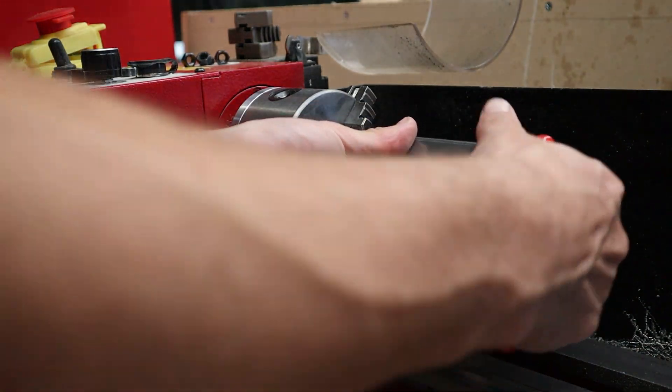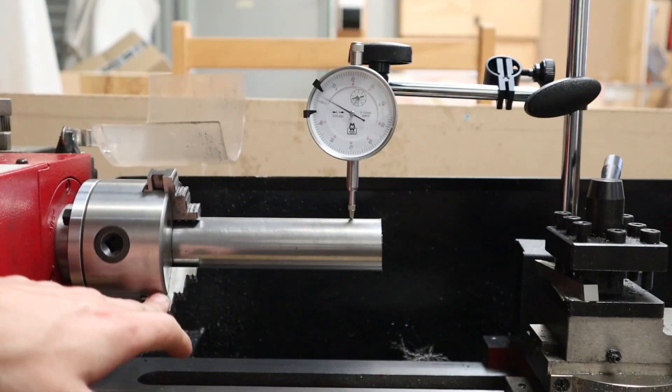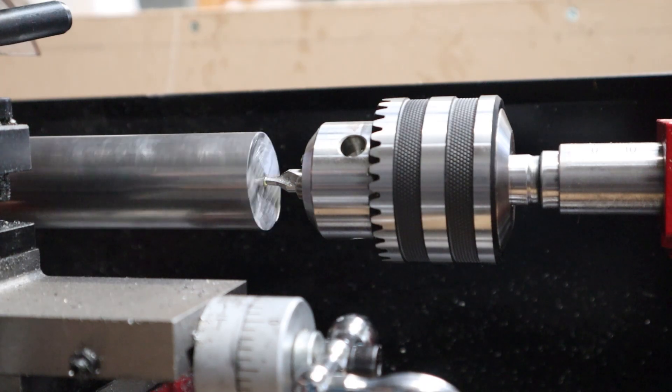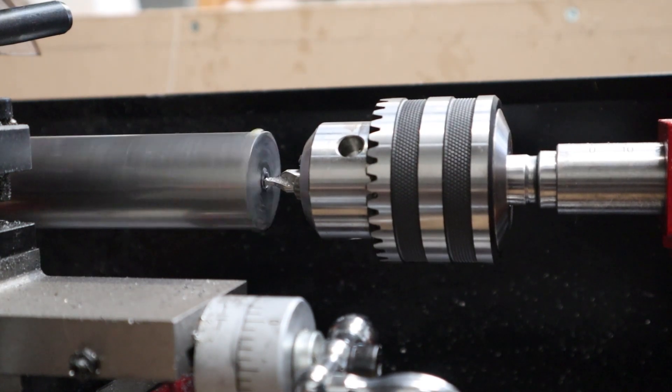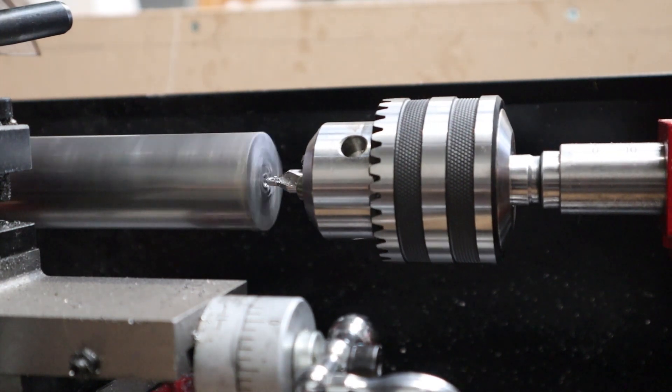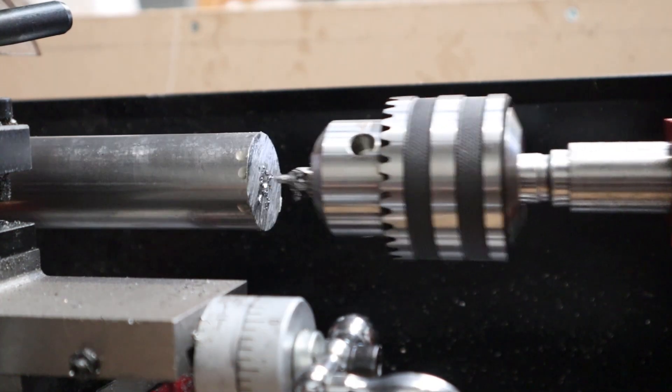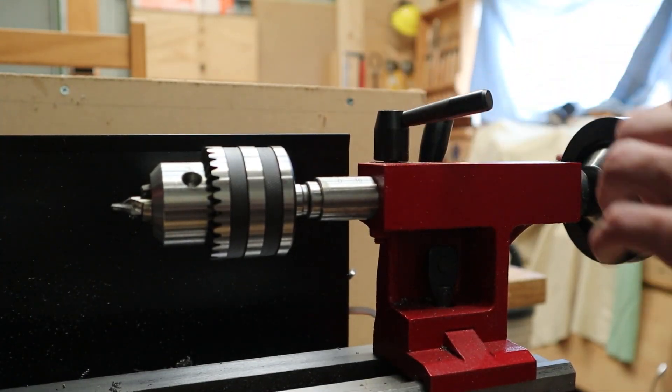Once again, it's back into the lathe and getting it centered with the dial indicator. Drilled another pilot hole and then brought out the snappy live center.